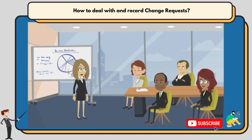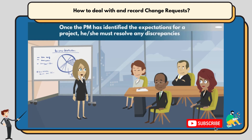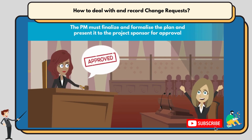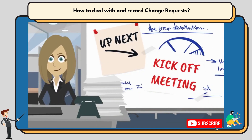They must uncover all available data and engage different stakeholders to obtain information critical for planning. They must also perform all planning work with sufficient breadth and depth. Once they have identified the expectations for a project, they must resolve any discrepancies. Finally, they must finalize and formalize the plan and present it to the project sponsor for approval. That is the point when they can finally move on to the execution — just like we are about to do now.